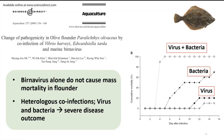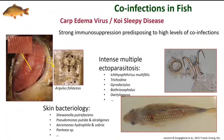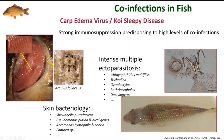Another example: carp edema virus causes immunosuppression, making fish highly susceptible to other infections such as parasites and bacteria. When visiting farms, hatcheries, or aquaculture facilities, you commonly see moribund fish that on closer examination have not only parasites but also bacteria and virus. The virus may be behind many co-infections because it causes strong immunosuppression.